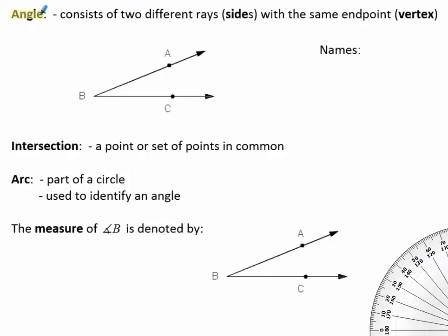An angle consists of two different rays, those are the sides, with the same endpoint. That would be the vertex. So in this picture, the rays that are the sides are ray BA and ray BC. Notice they meet at that endpoint and the endpoint is called the vertex. Here is the endpoint, point B, and that is the vertex.